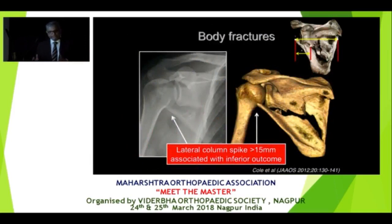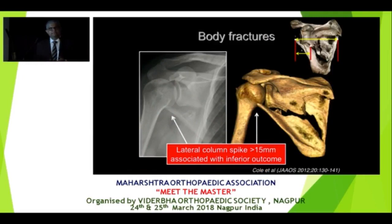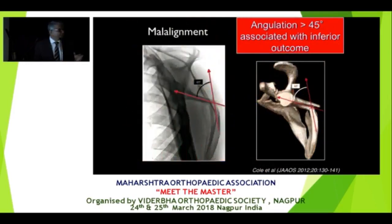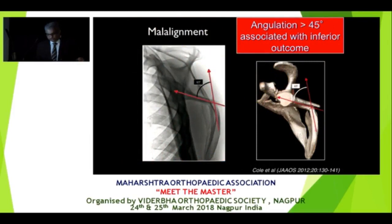Second, if you look at the lateral column spike and it is more than 15 millimeters displaced, those are patients you would think about for surgical fixation. And lastly, on an axial view, if you look at the body of the scapula and there is an angulation of more than 45 degrees, these are the patients you would again consider for surgical intervention.